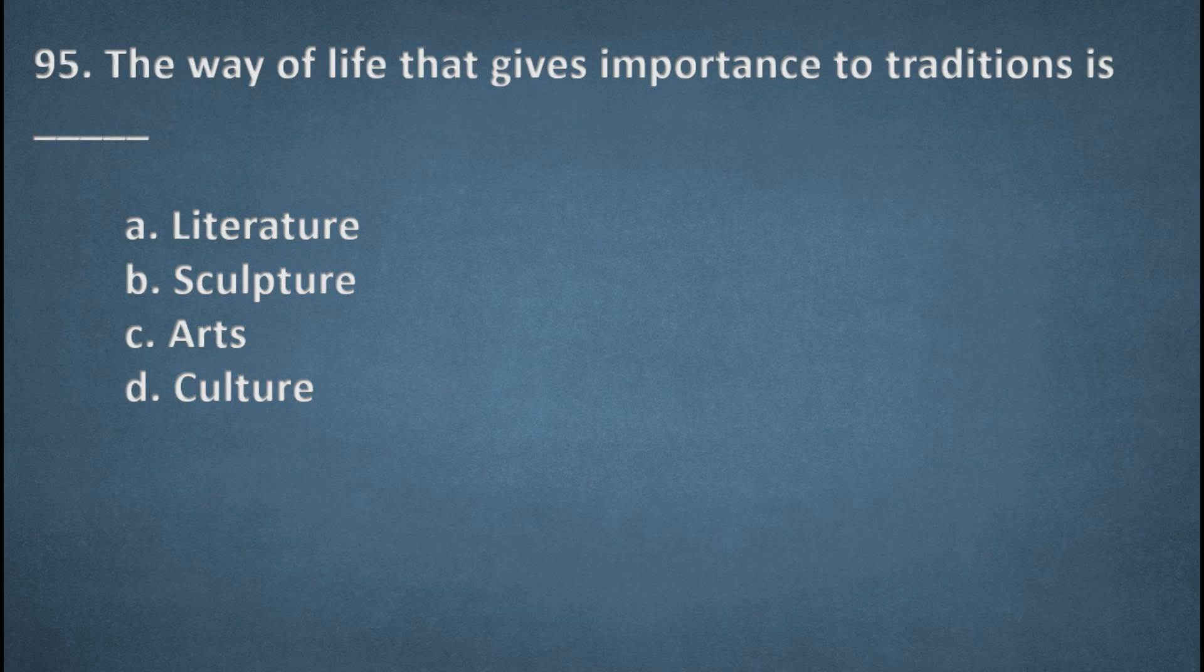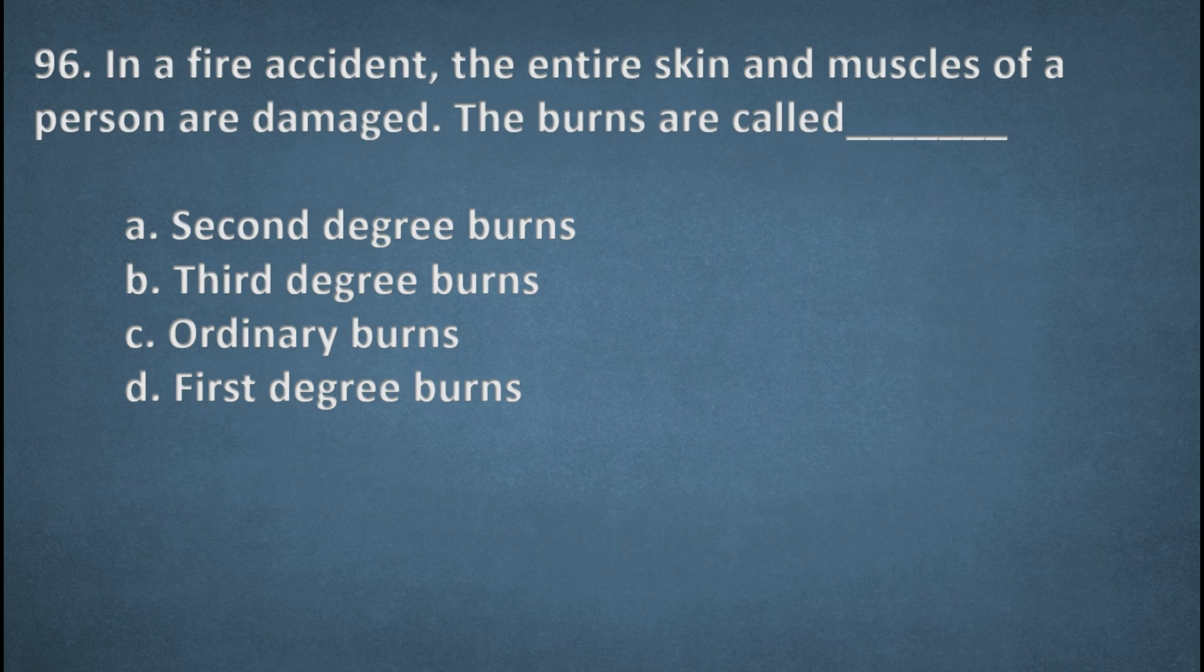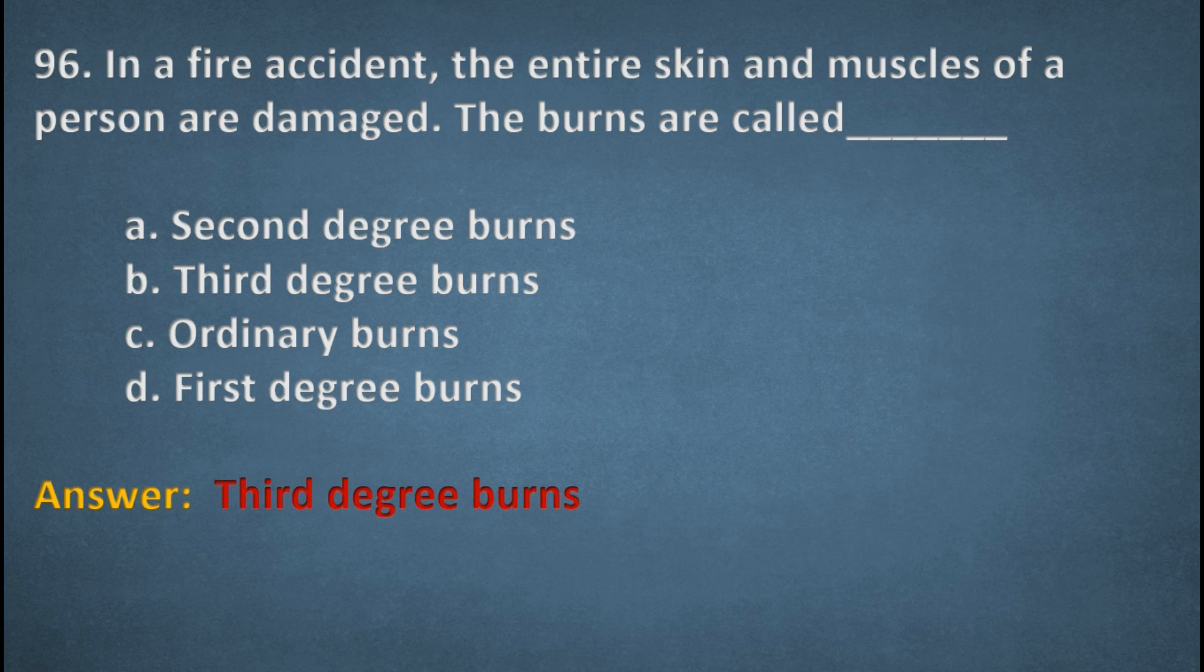Next one. The way of life that gives importance to the tradition is. Options: Literature, Sculpture, Arts, Culture. The right option, D, Culture. Next one. In a fire accident, the entire skin and muscles of a person are damaged. The burns are called. Options: Second degree burns, Third degree burns, Ordinary burns, First degree burns. The right option, B, Third degree burns.